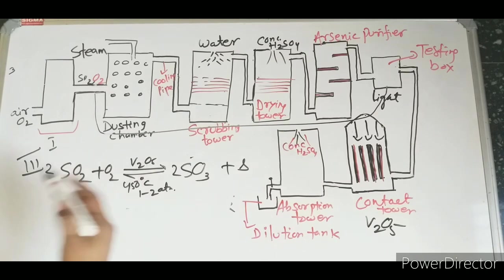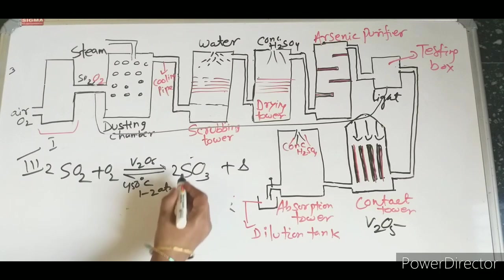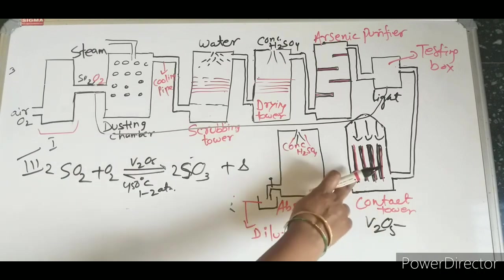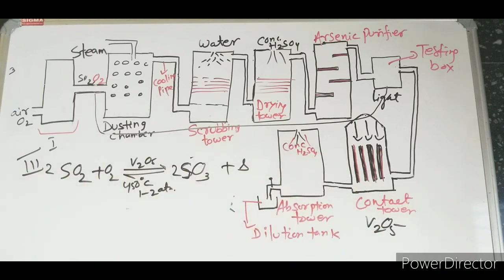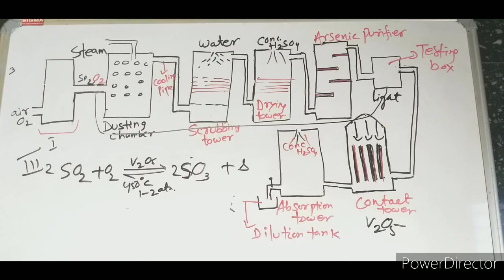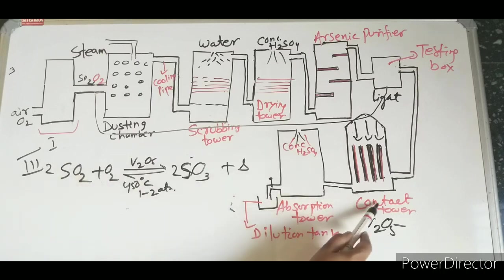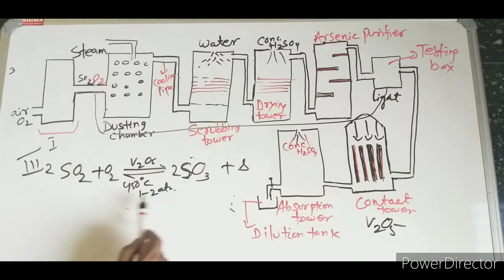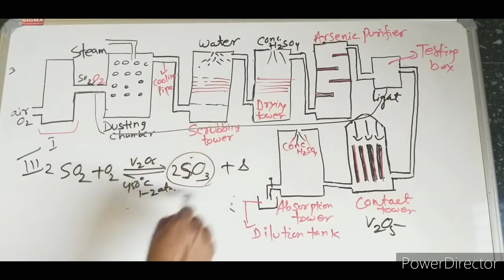Oxygen must be continuously and maximally supplied for high yield of sulfur trioxide. SO2 comes into contact with oxygen in the presence of vanadium pentoxide at 450 degrees Celsius and 1 to 2 atmospheric pressure, and SO3 gas is produced.